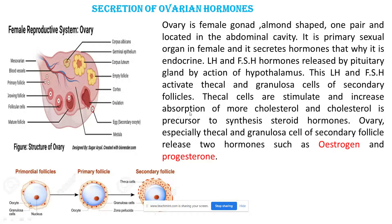The thecal cells are stimulated and increase their absorption of cholesterol. Cholesterol is the precursor for the synthesis of steroid hormones. The mitochondrial enzymes present in the ovarian cells absorb more cholesterol, and this cholesterol serves as the precursor for steroid hormone synthesis.